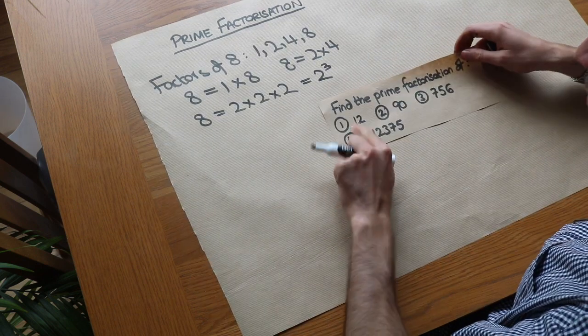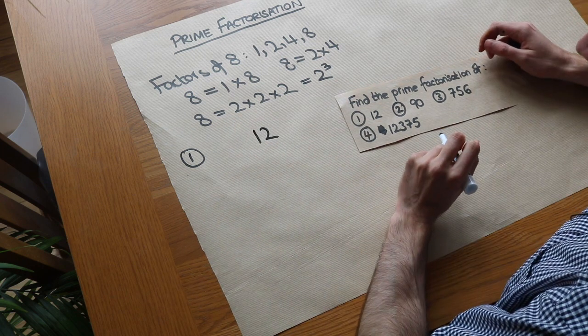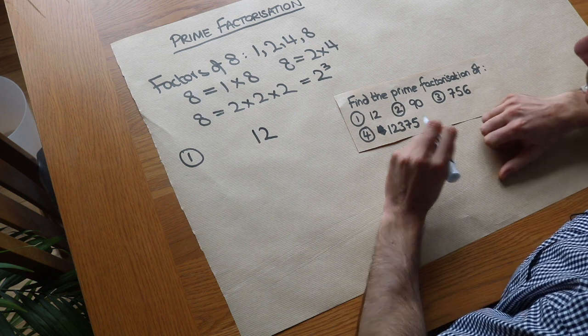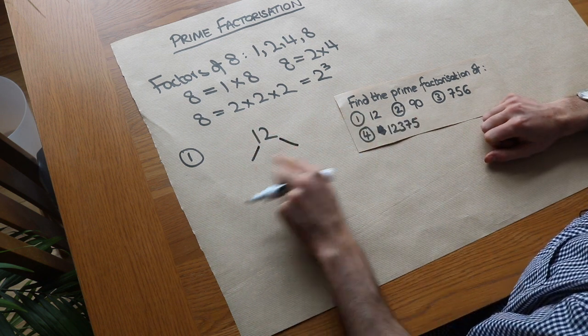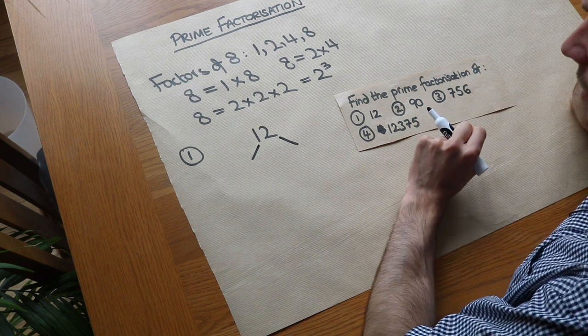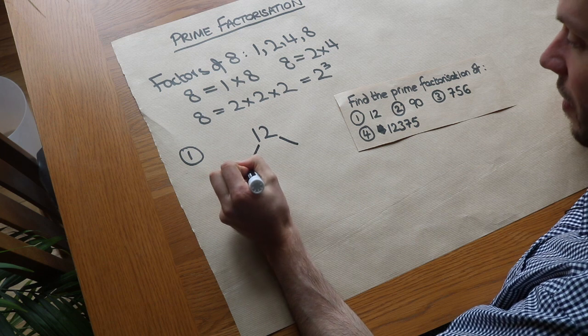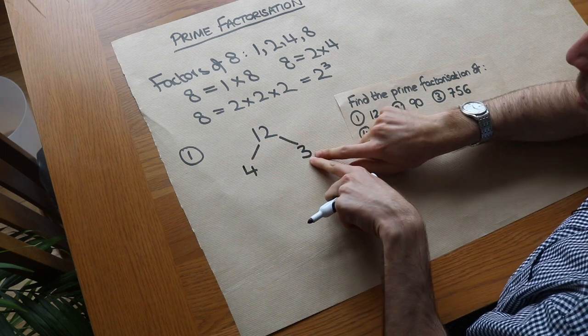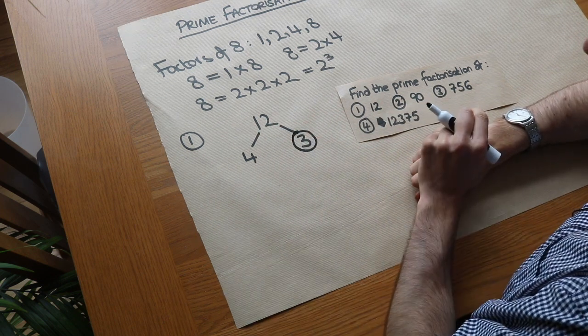So let's do some examples. We've got say 12 and we want to write 12 as a product of the prime factors that it has. Now one way we can do it is to have a tree. So we kind of divide 12 up into two numbers that multiply to give it. So what two numbers multiply to give 12? We could have say 4 and 3. Now if you get a prime number I tend to circle it and then we can stop at that point in the tree.